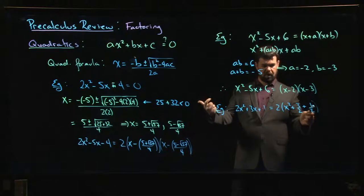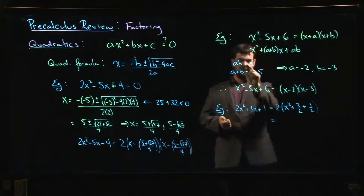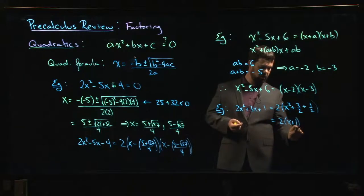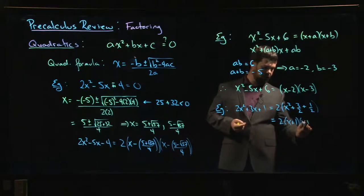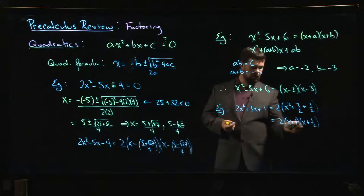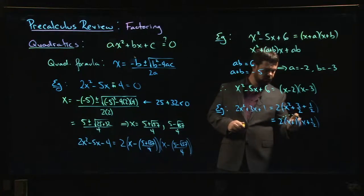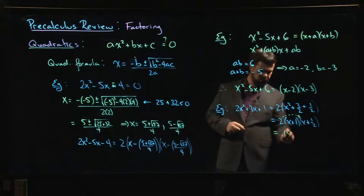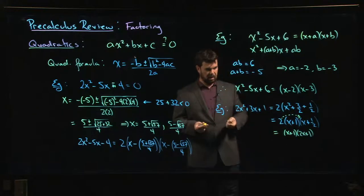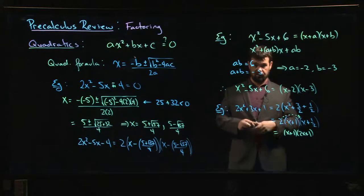We want two numbers that multiply to give 1/2 and add to give 3/2. Since 1 times 1/2 gives 1/2 and 1 plus 1/2 gives 3/2, those work. So we factor as 2 times (x + 1)(x + 1/2). If you don't like the fraction, you can pull the 2 into the second factor and write it as (x + 1)(2x + 1). The zeros are x = −1 and x = −1/2.